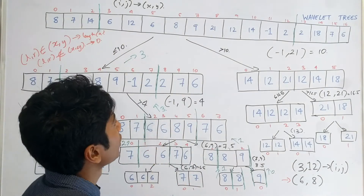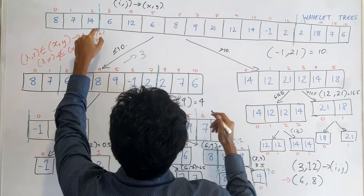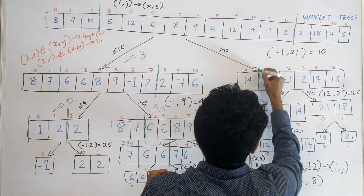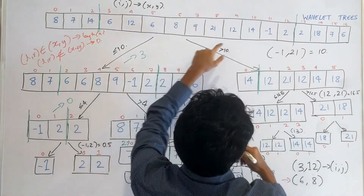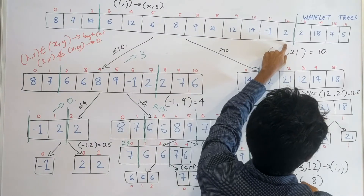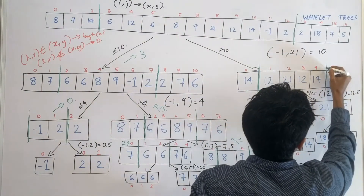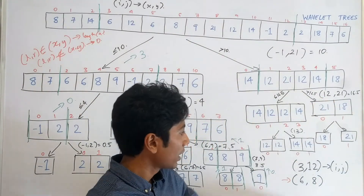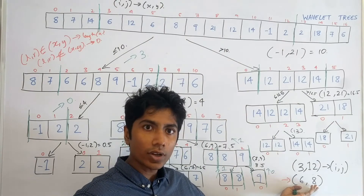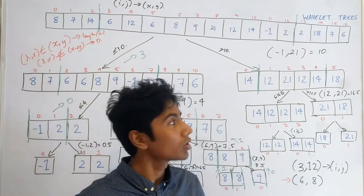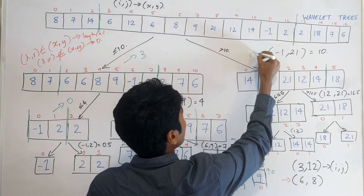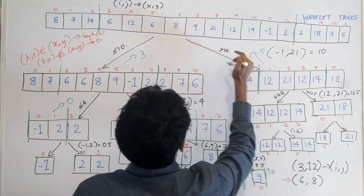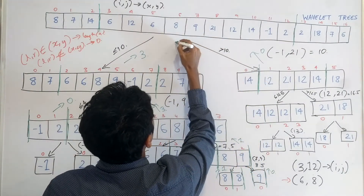What about the right subarray? The right subarray has the mapped range starting from one point and ending just before 18. The value range of that node is 12 to 21, which does not fall within 6 to 8 at all, so we return 0. The final answer is 3 plus 0, giving a final answer of 3.